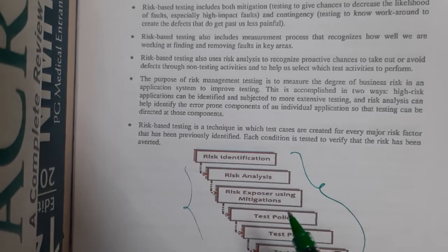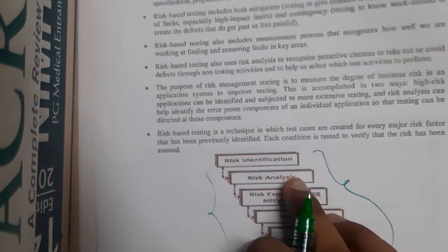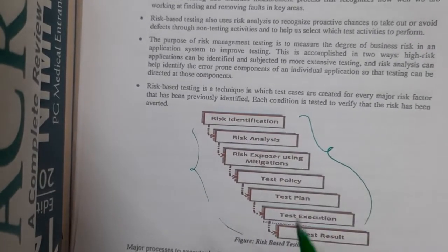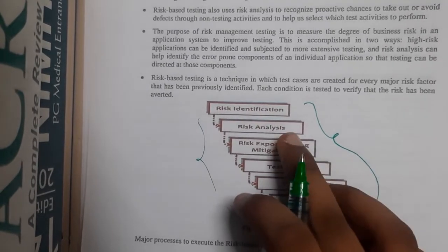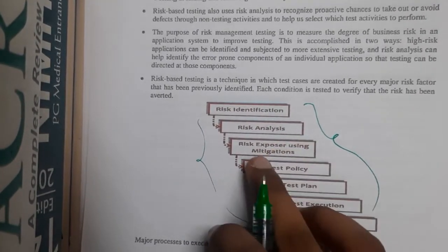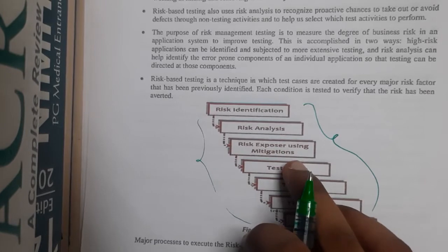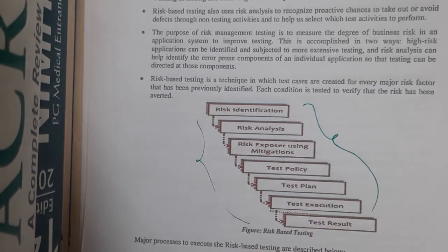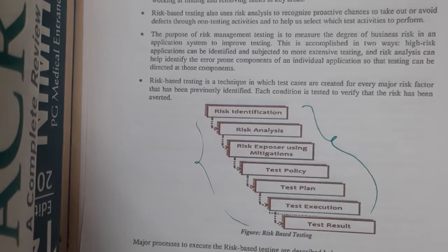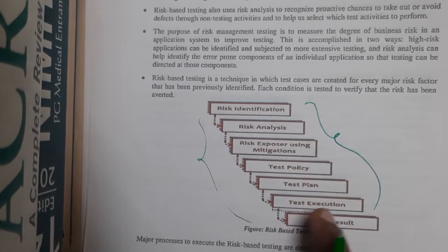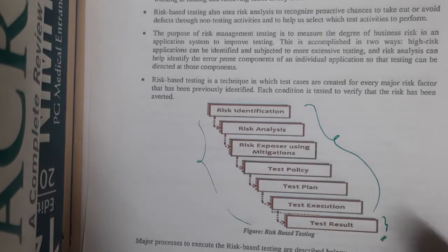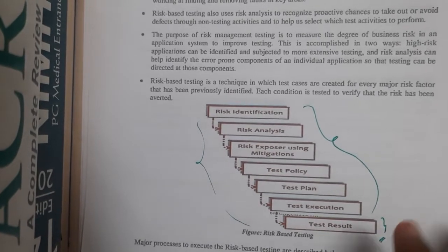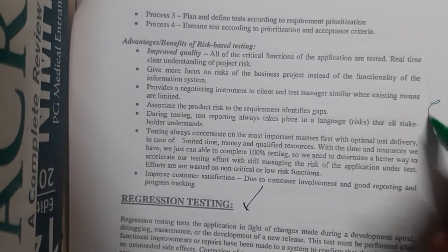Risk-based testing is performed in a step-by-step flow. Firstly, you will be identifying the risk, then you will be analyzing it — basically whether it is useful to resolve it or you can just omit it. Once analyzed, you explore mitigation by doing small changes to resolve it. Then you check the test policies, plan it, execute it, and give the final test result on whether to change things or follow as-is.